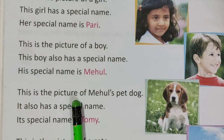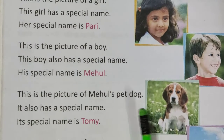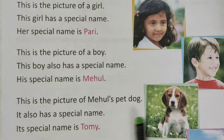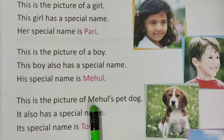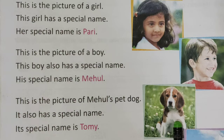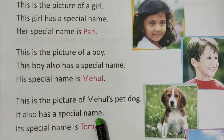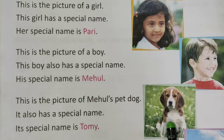This is the picture of Mayhul's pet dog. Yeh dog kiska hai? Mayhul ka. Iska bhi ek special name hai. It also has a special name. Yeh Mayhul ke pet dog — means paltu dog — ka picture hai. Its special name is Tommy. Iska name kya hai? Tommy. Toh Tommy kya hai? Special name hai, kyunki Tommy is naam se is dog ki pehchaan hai.